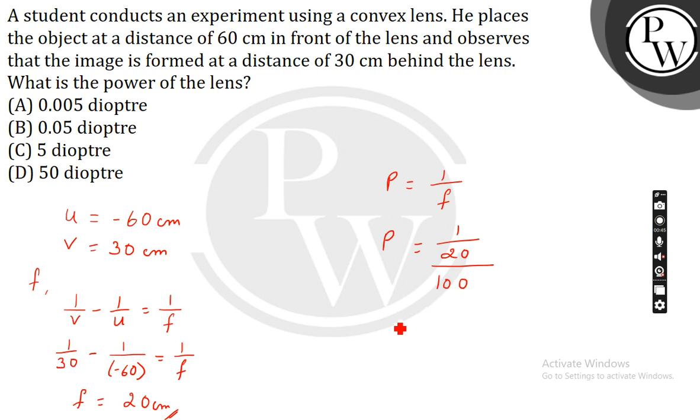P becomes 100 by 20 which is equal to 5. The correct answer is 5 diopters. Option number C is our correct answer.